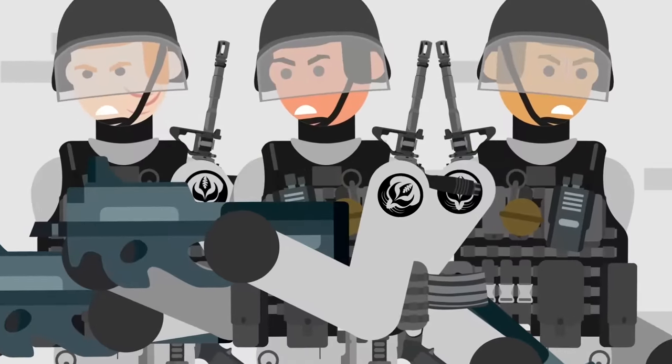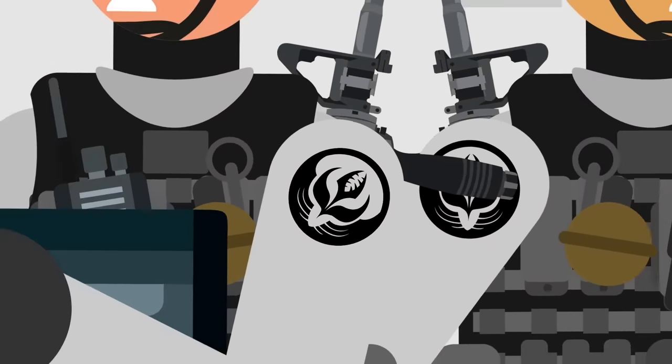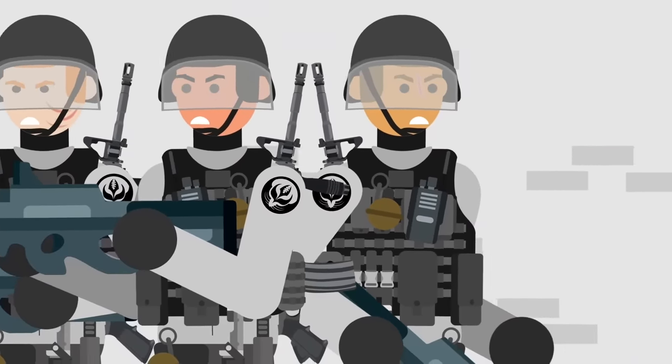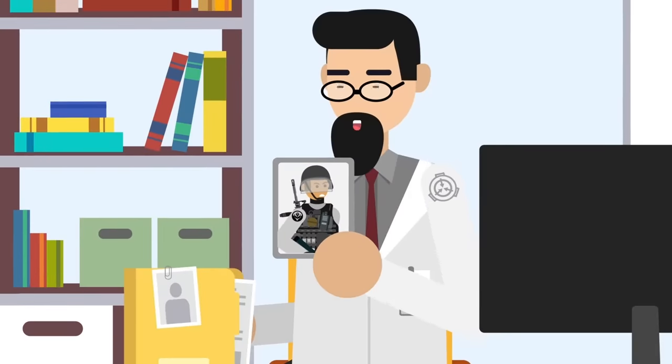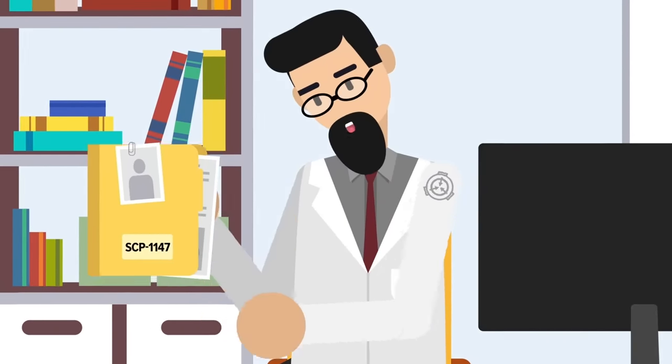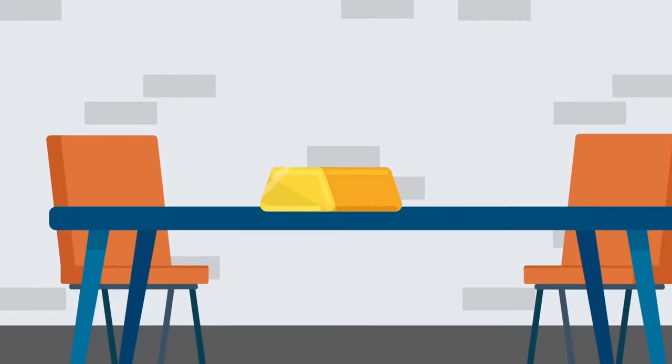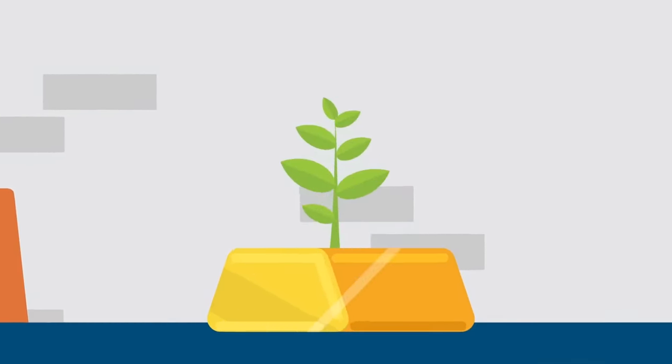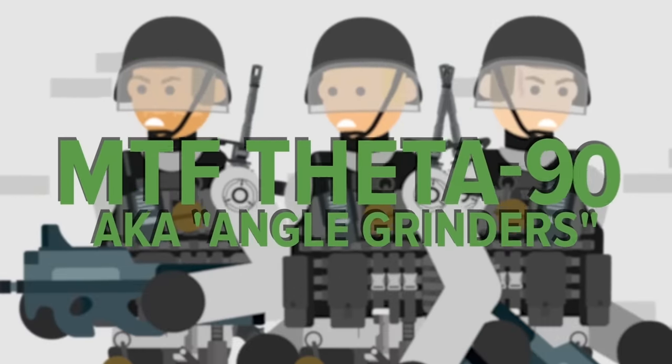MTF Theta-4, aka Gardeners, are a crack team of agents who face off against any botanical or plant-like anomalies. Their skills were put to use against SCP-1147, a collection of plum tree seeds which can grow out of literally any substance, even ones that are totally inorganic.